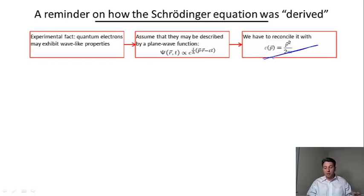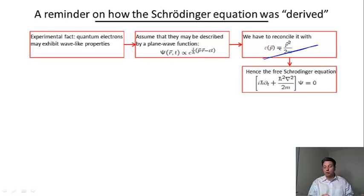The equation itself was constructed to ensure that the plane wave function would come out as its solution and this dispersion relation would be respected. The equation involved the second derivative with respect to coordinate and first derivative with respect to time.